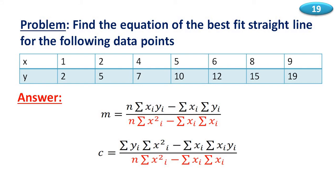Find the equation of the best fit straight line for the following data points: x equals 1, 2, 4, 5, 6, 8, 9 and y equals 2, 5, 7, 10, 12, 15, 19. For example, when x equals 1, y equals 2; when x equals 2, y equals 5; when x equals 9, y equals 19. From this table we need to find the best fit straight line using the equations for m and c, then substitute into y equals mx plus c.